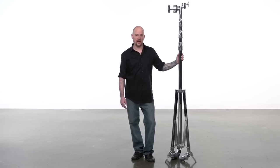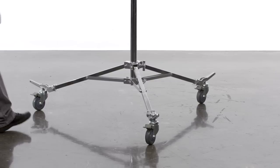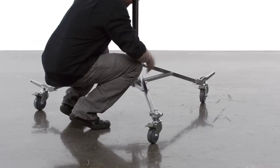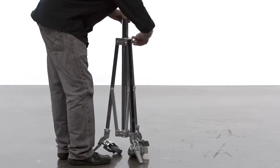To close the stand, reverse the process. Loosen the leg adjustment knob and bring the legs in until they are folded against the riser section. Watch your fingers.